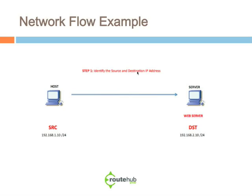Step one: Host A wants to talk to the server. The first thing you need to do is identify the source and destination IP addresses. The source is the one initiating the request, which is 192.168.1.10. The destination is what the computer wants to communicate with — the web server — and that destination IP address is 192.168.2.10. So we identify the source and destination IP addresses.